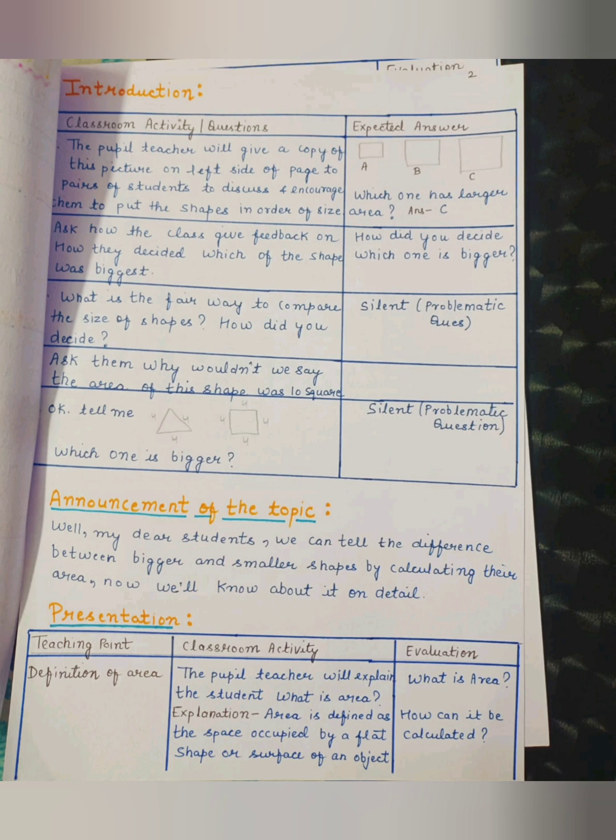Teaching point: Classroom activity Evaluation. Definition of area: The teacher will explain to the student what is area. Explanation: Area is defined as the space occupied by a flat shape or surface of an object. Evaluation: What is area? How can it be calculated?